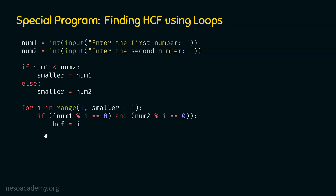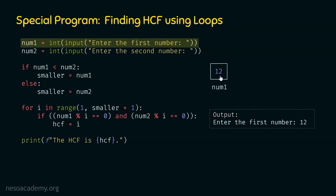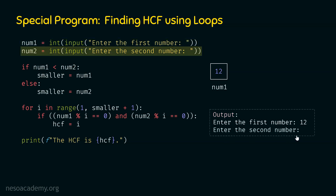Now let's execute this program line by line. num1 = int(input('Enter the first number')) — let's say the user enters 12, so num1 points to the object with value 12. Then num2 = int(input('Enter the second number')) — let's say the user enters 15, so num2 points to 15. Now we check if num1 < num2: since 12 < 15, smaller = num1, so smaller also points to the object with value 12. Both num1 and smaller labels point to the same object.